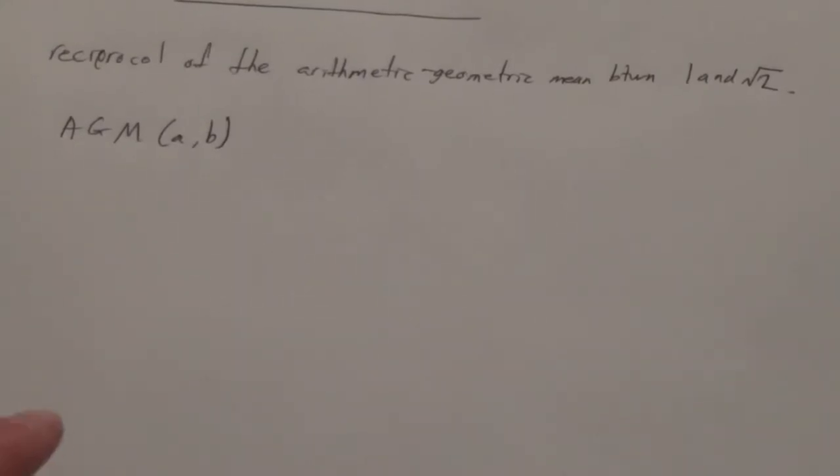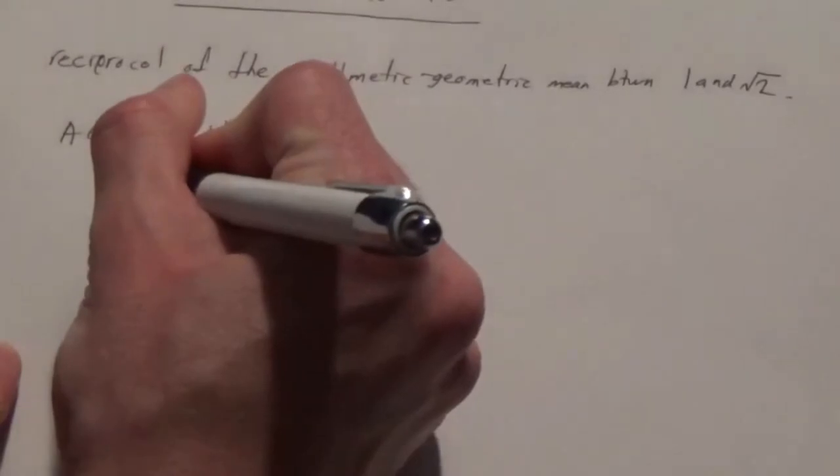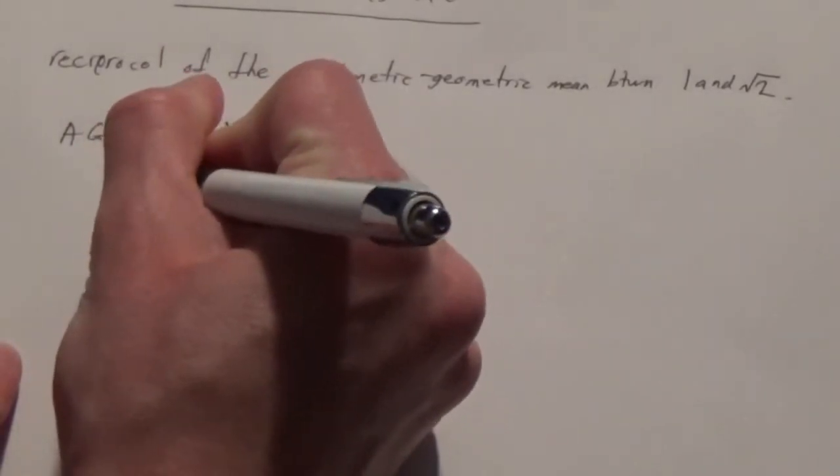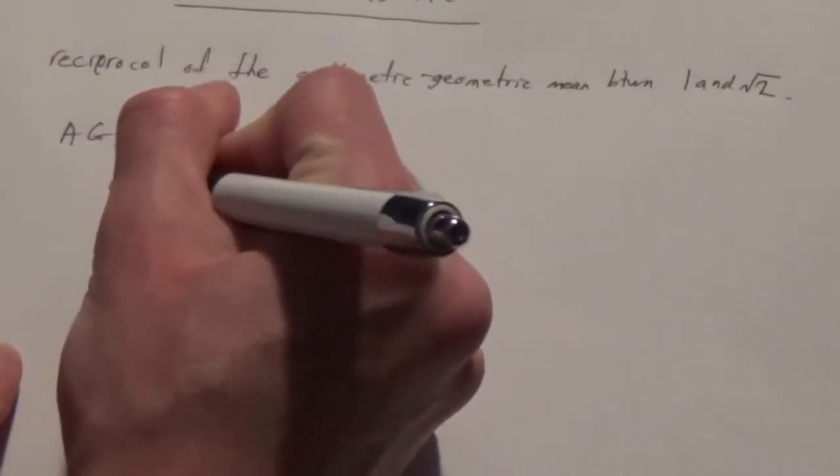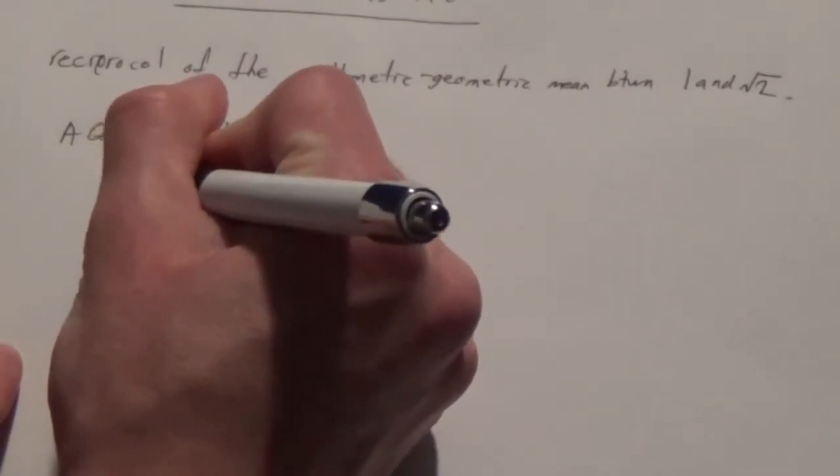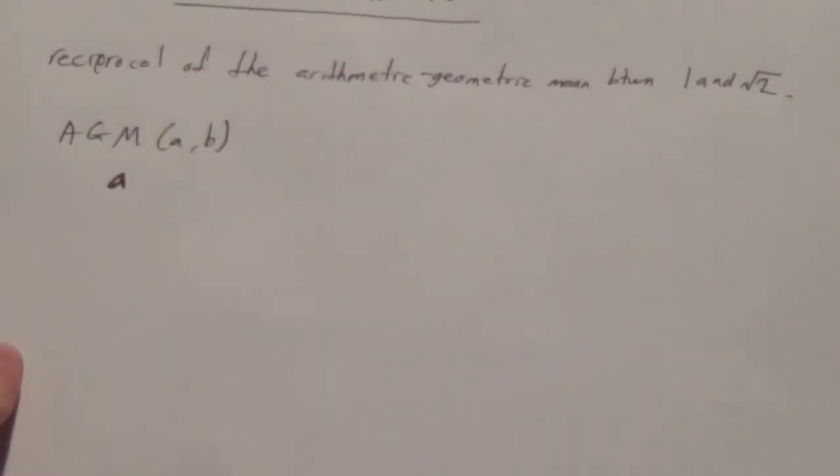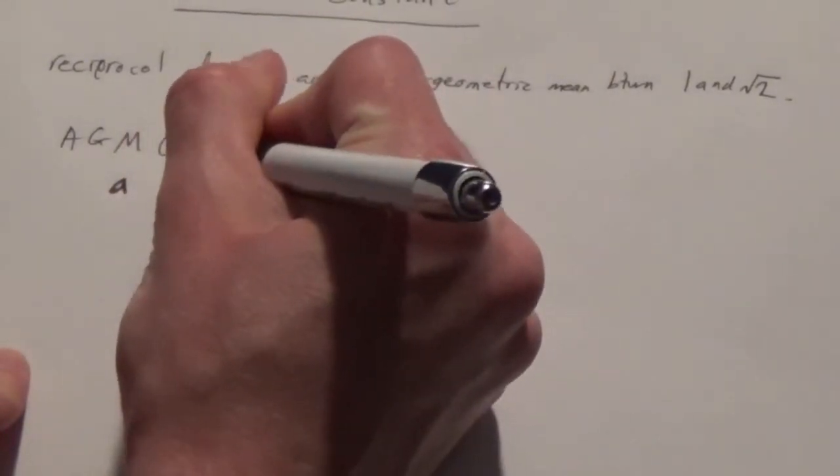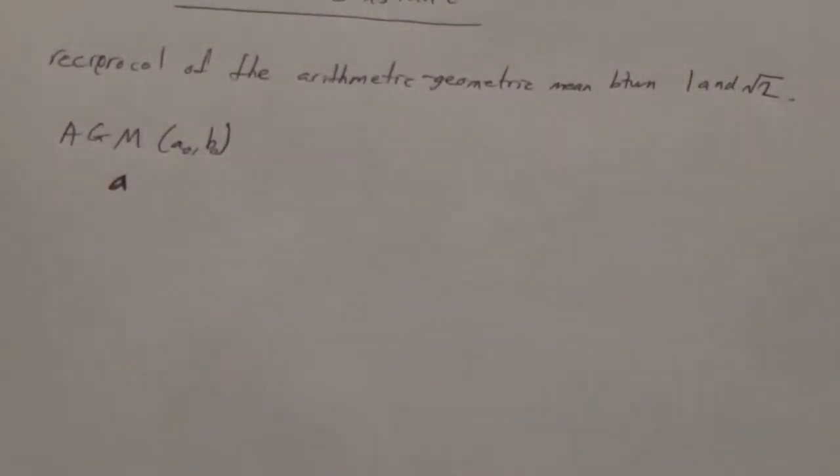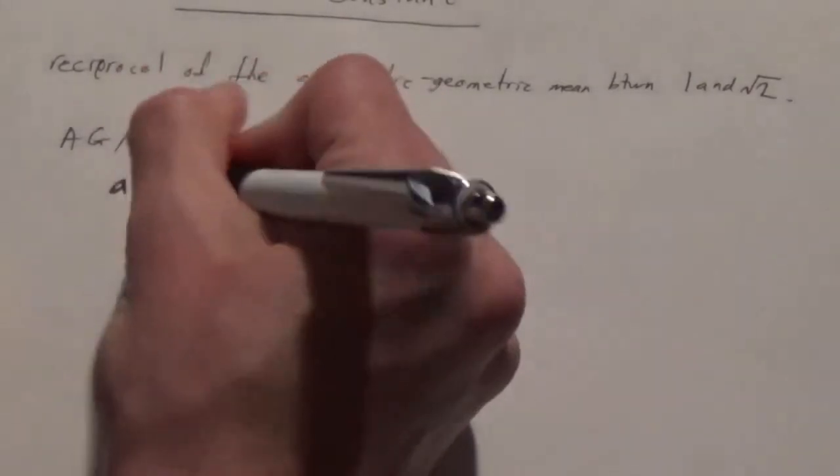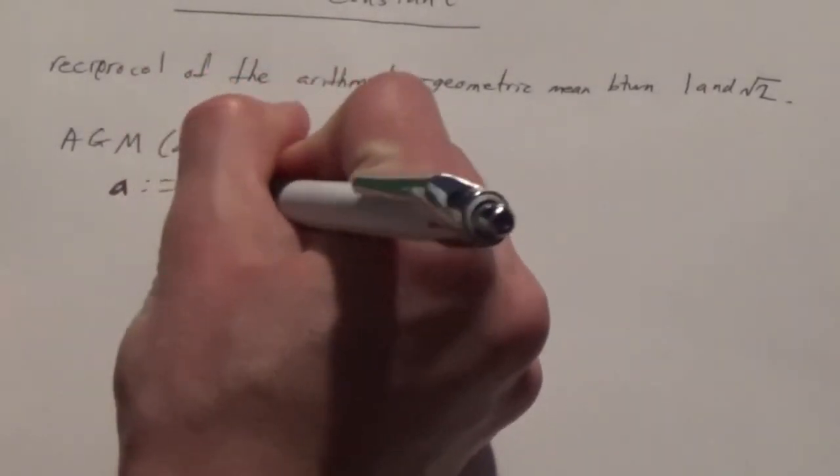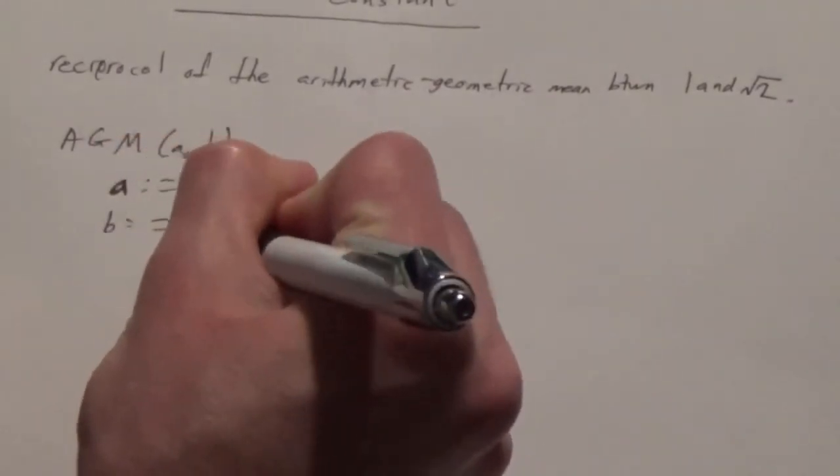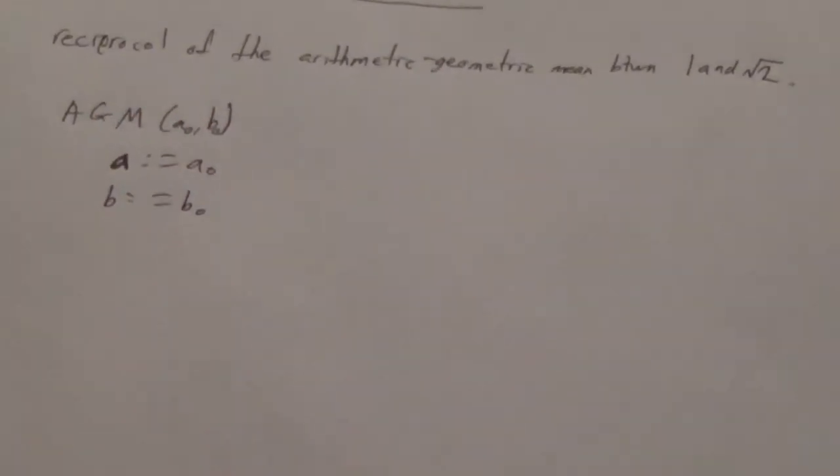I'm going to call this A0 and B0, because those are actually the starting values in sequences that we're creating. And so A starts out as A0, and B starts out as B0, and then what we do is we actually keep calculating new values of the sequences A and B.